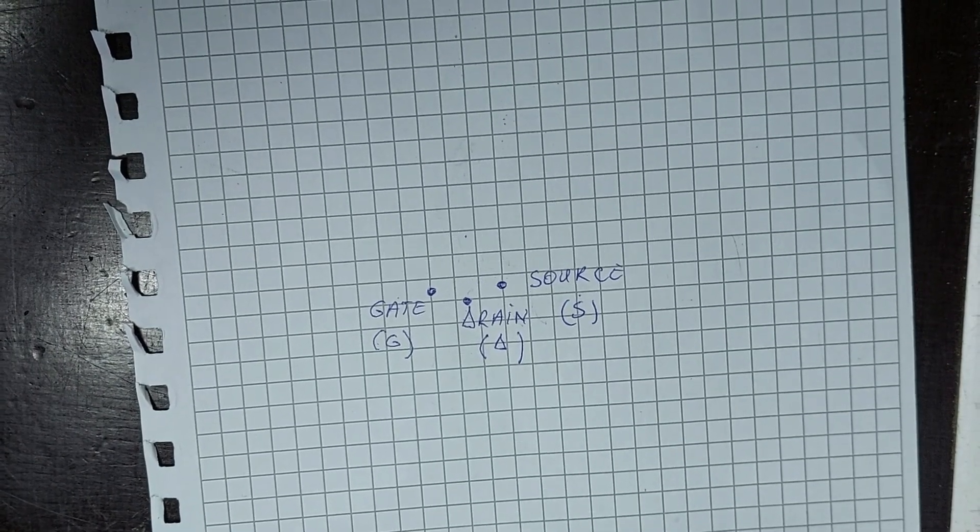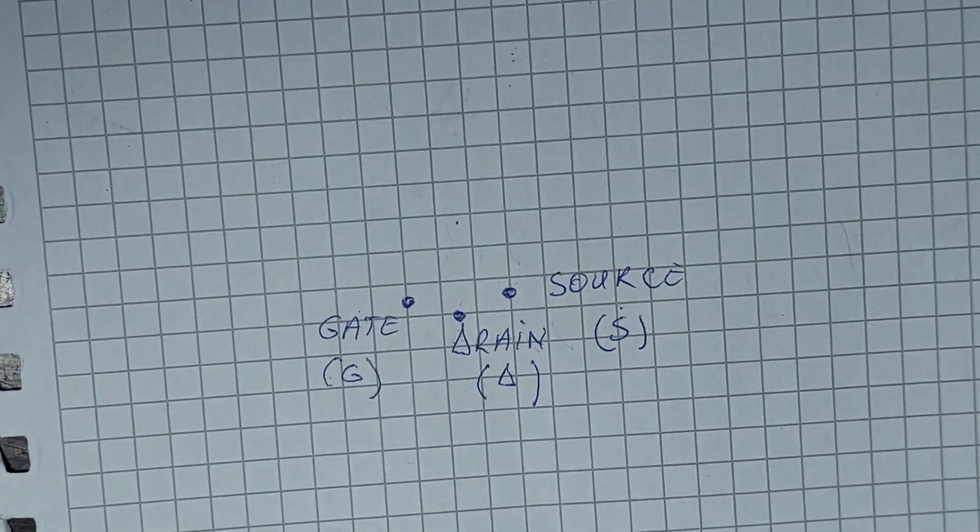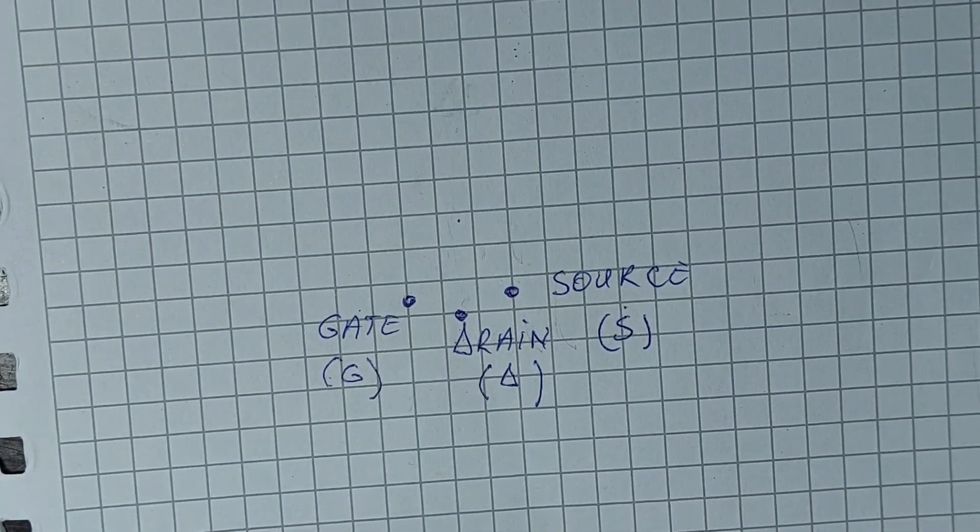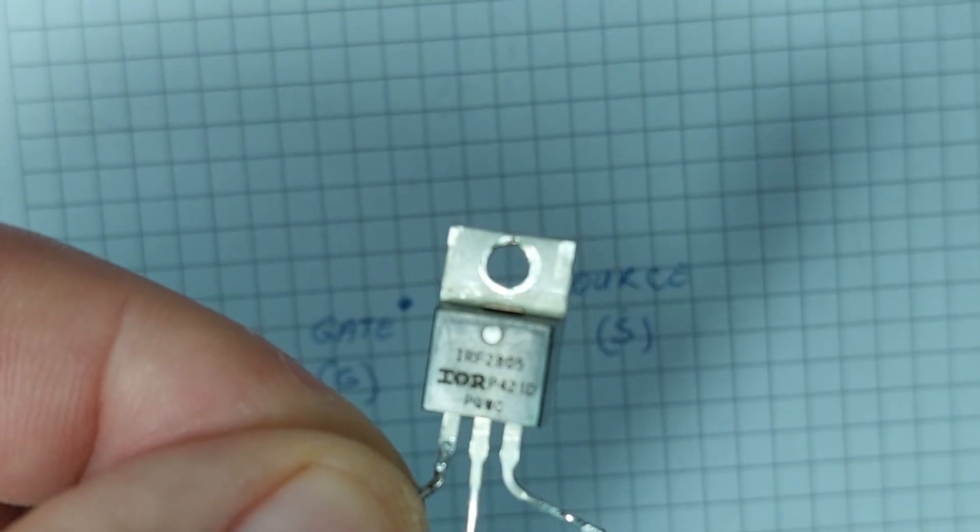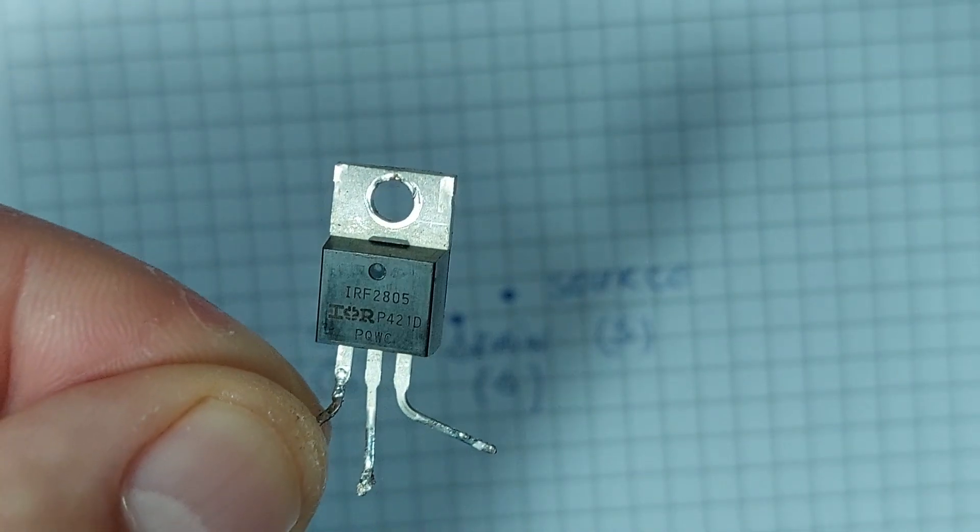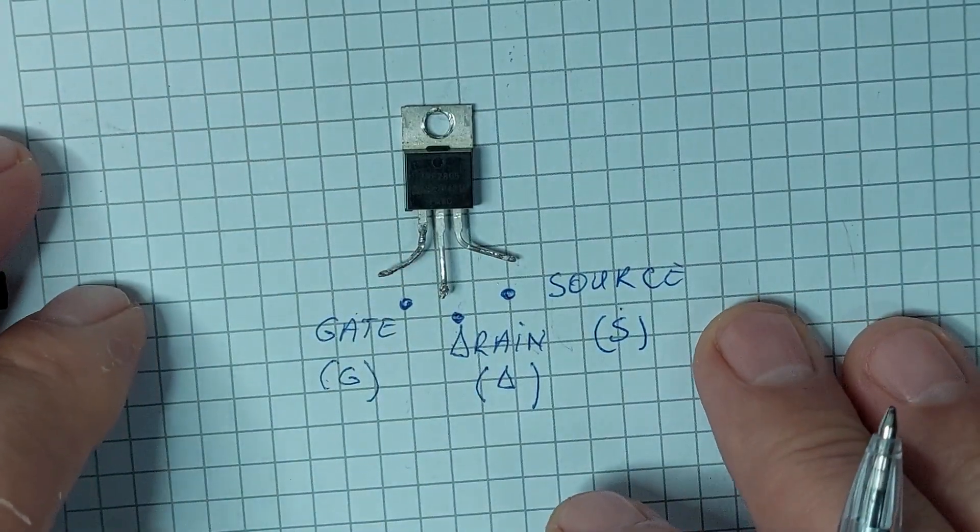Before we start, let's take a quick look at what a MOSFET is and how it functions. A MOSFET, or Metal Oxide Semiconductor Field Effect Transistor, is a type of transistor used for switching or amplifying signals. It has three main terminals: the gate, drain, and source.